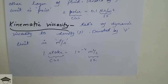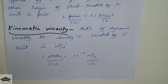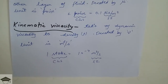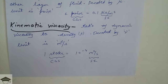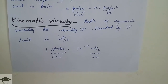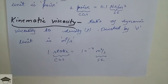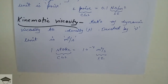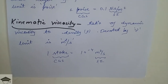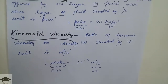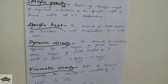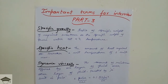Kinematic viscosity: the ratio of dynamic viscosity to density. It is denoted by nu. Its SI unit is meter square per second, the CGS unit is stoke, and the relation is that one stoke equals 10 to the power minus 4 meter square per second.